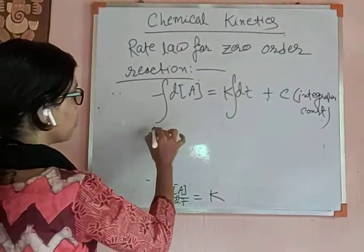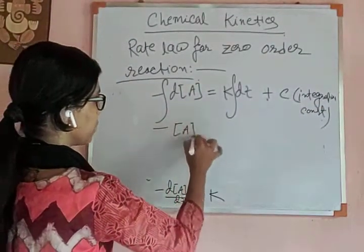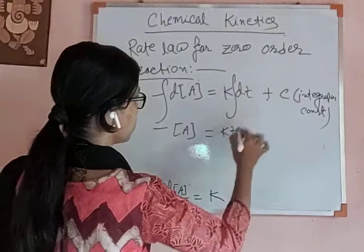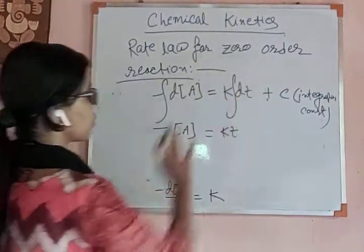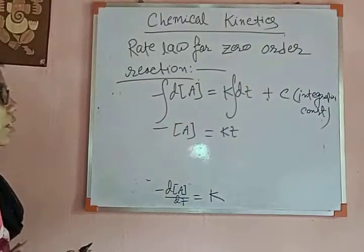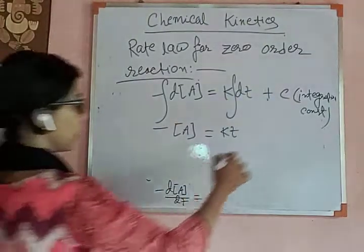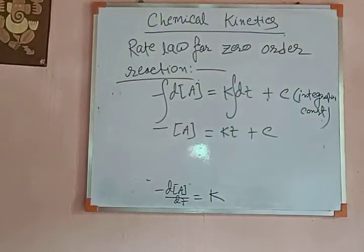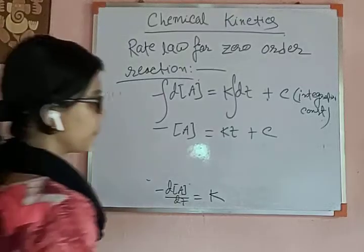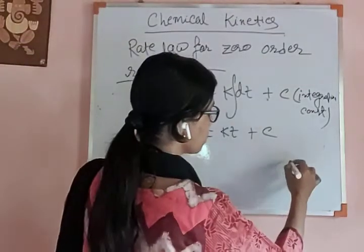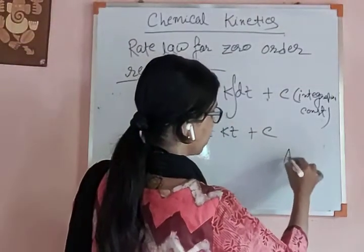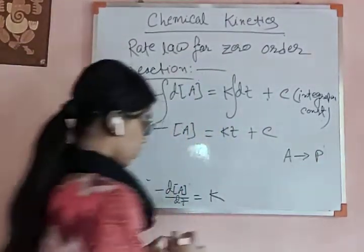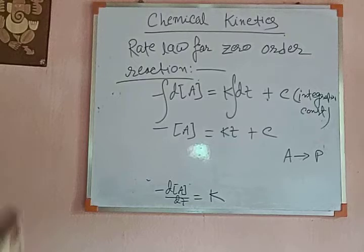So minus DA gives minus A, and you get K into T on the right side. Integration of DT means T, and integration of DA means A, plus C. Now in the reaction A to P, we apply two boundary conditions.